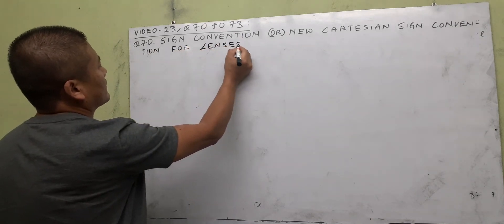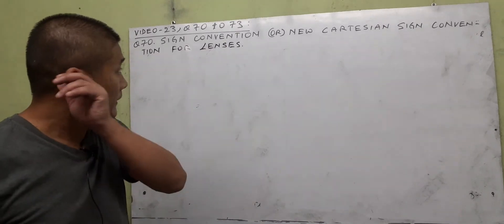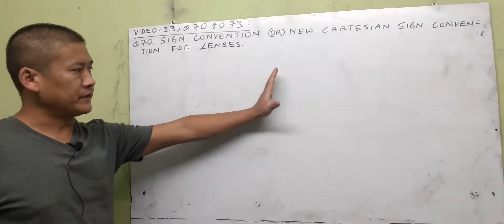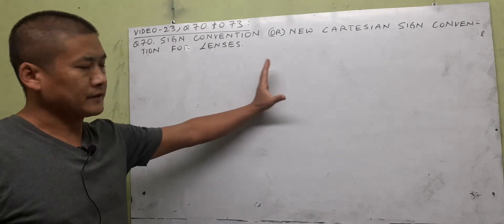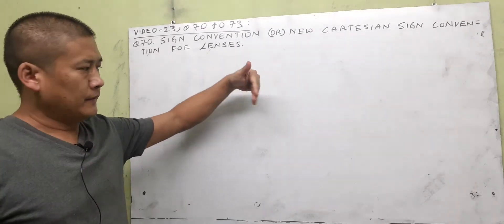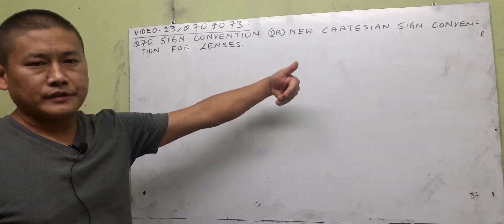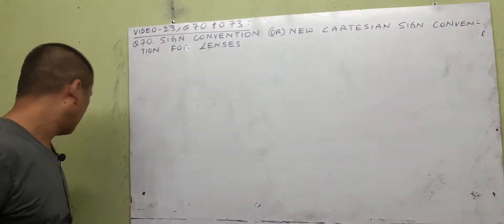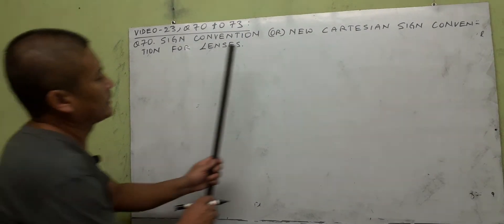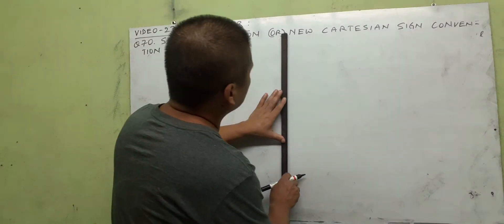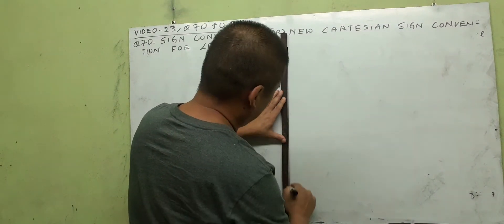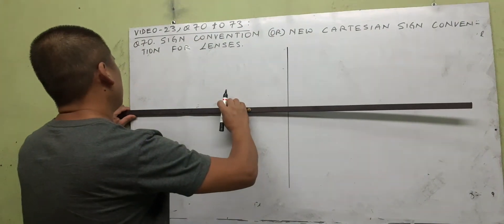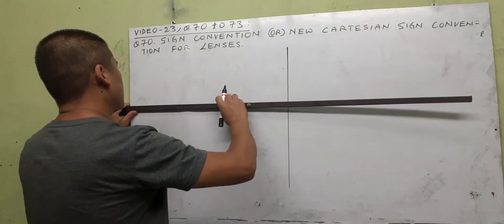This is the sign convention for lenses. The rule is the same as for mirrors, but for lenses the nature and position of the image is different from a mirror, so we have to be careful. On your notebook, divide it into two halves — on the left we draw a convex lens.